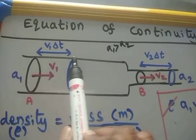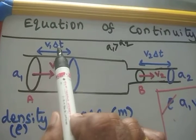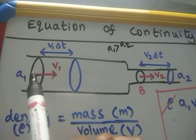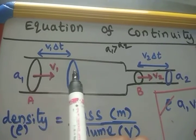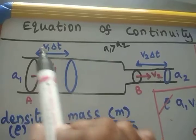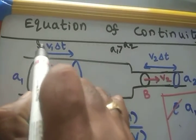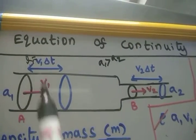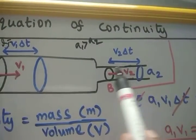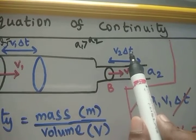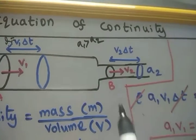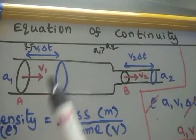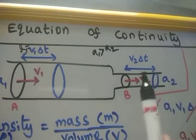Let us consider a fixed time delta T. The liquid will travel a distance L1 which is equal to V1 delta T, because length equals velocity into time. Similarly, the distance travelled at the same given time delta T at point B is V2 delta T. Both cover different distances because the velocity is not the same.